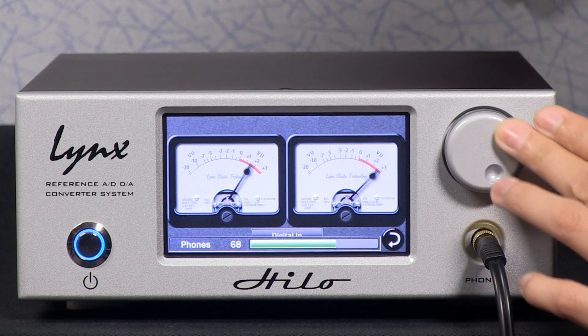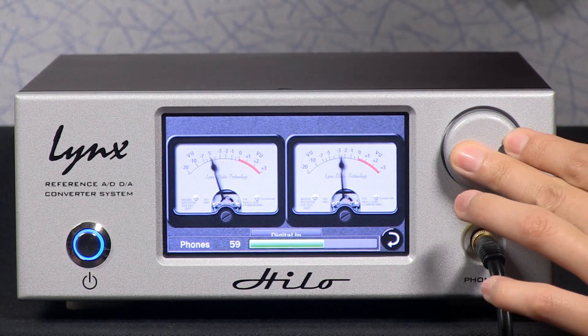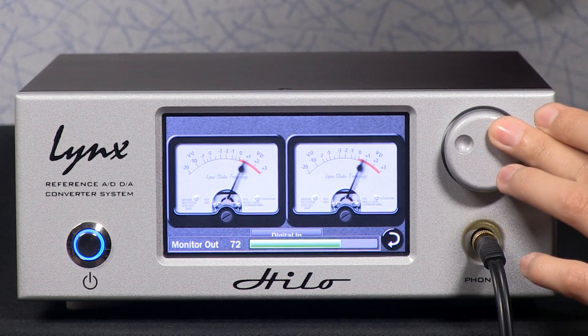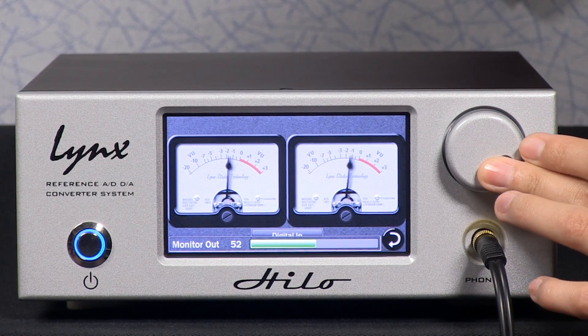Volumes of the headphones and monitors can be separately adjusted by half-decibel increments with a single knob. Simply press the knob in to toggle the volume control between the two.